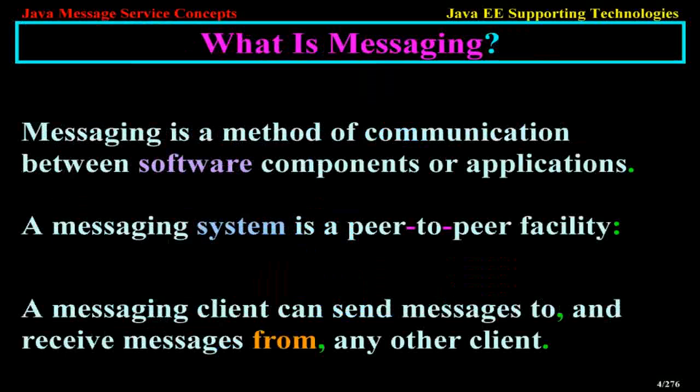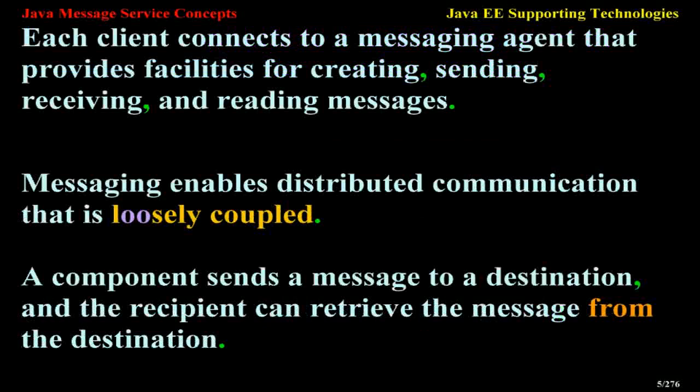What is messaging? Messaging is a method of communication between software components or applications. A messaging system is a peer-to-peer facility. A messaging client can send messages to, and receive messages from, any other client. Each client connects to a messaging agent that provides facilities for creating, sending, receiving, and reading messages. Messaging enables distributed communication that is loosely coupled. A component sends a message to a destination, and the recipient can retrieve the message from the destination.